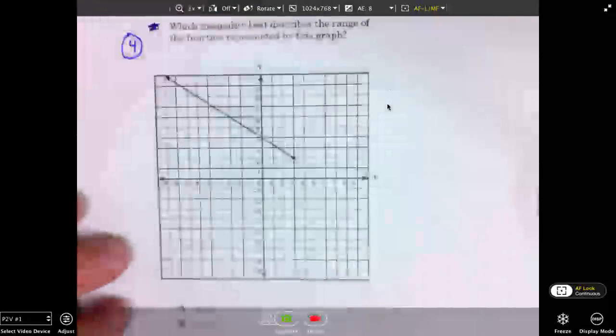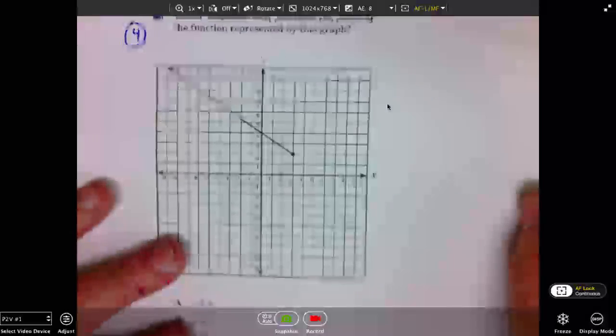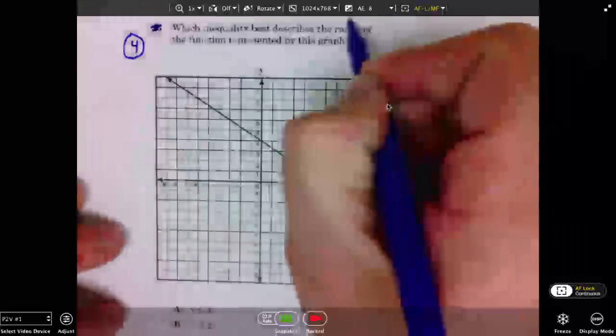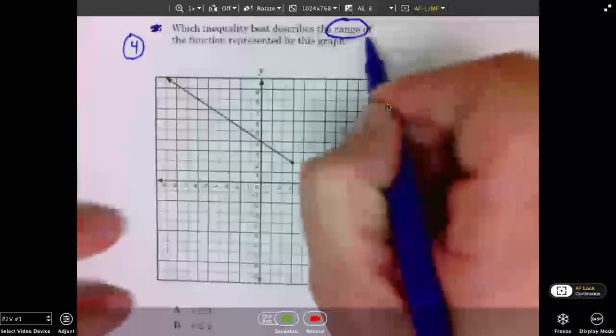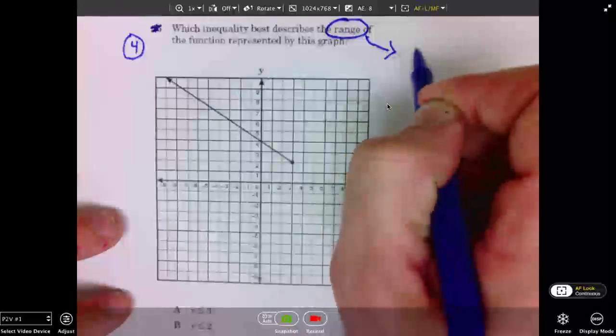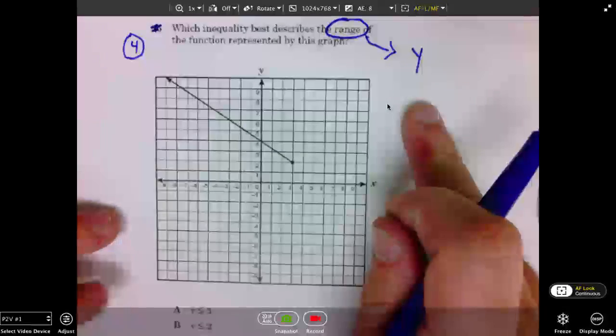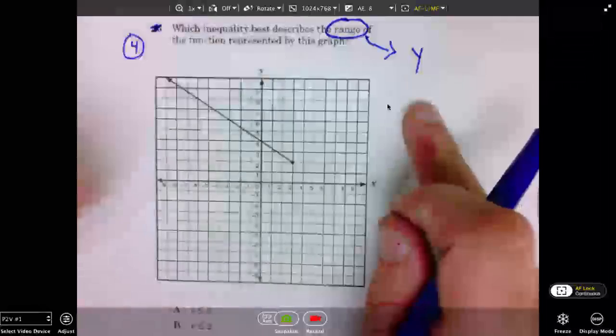It's labeled number 35. Let's call this one number 4. The question sentence asks us this time to identify the range. Well, we know range is the Y. And the Ys are vertical, up and down. So, I'm going to consider the bottom of the graph.